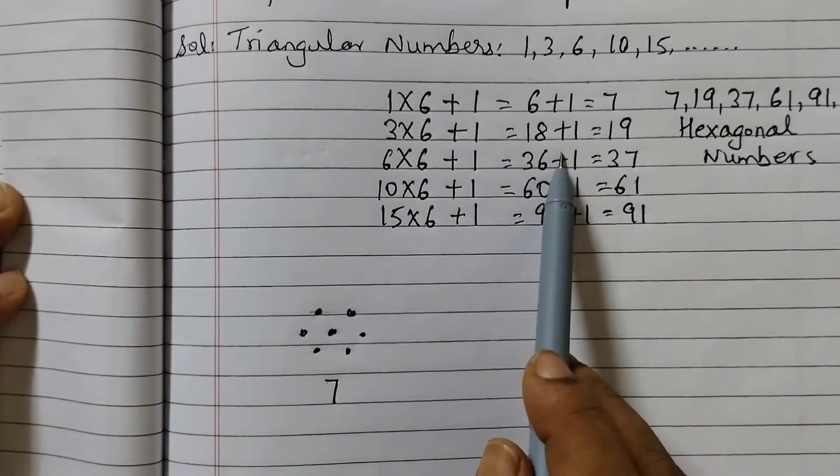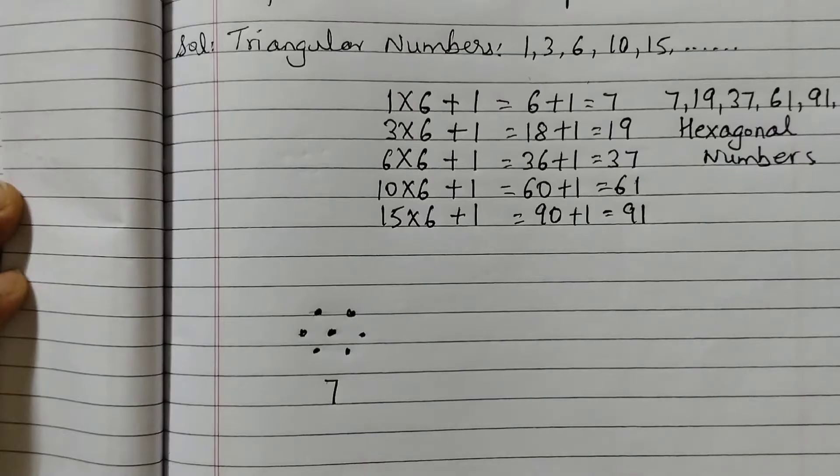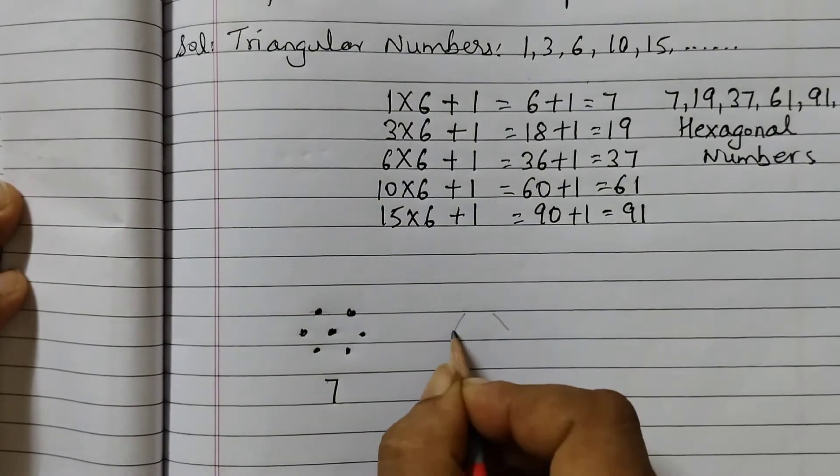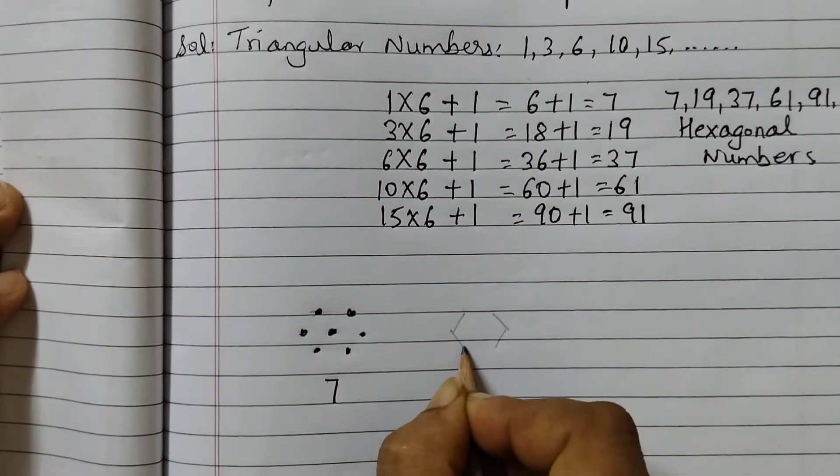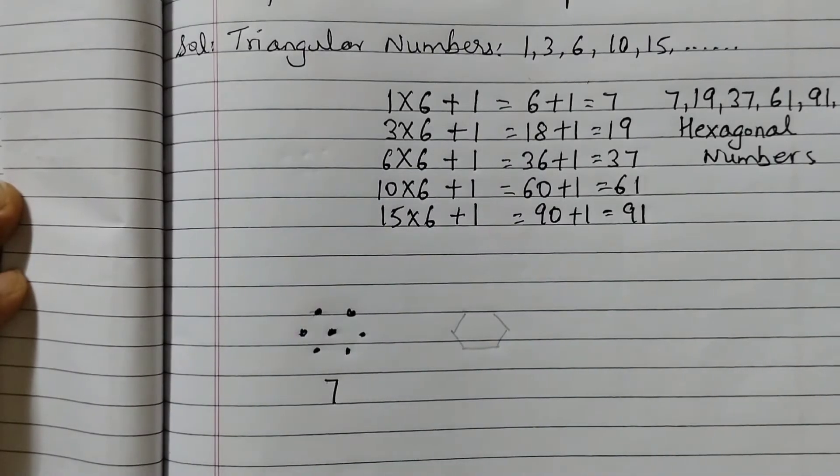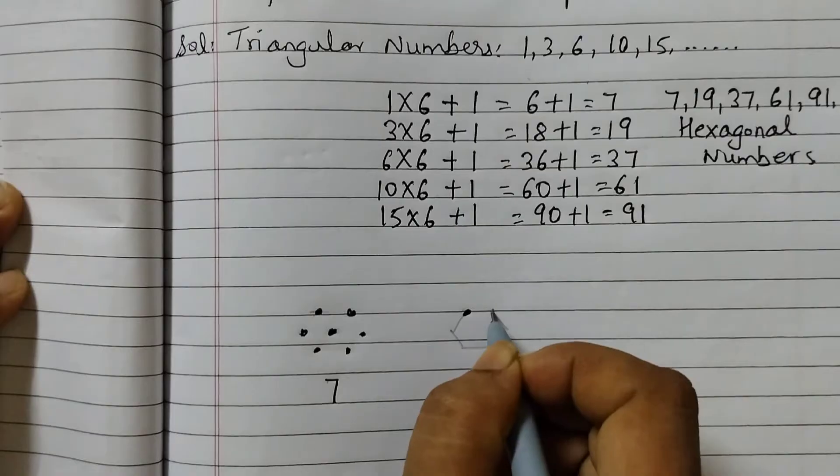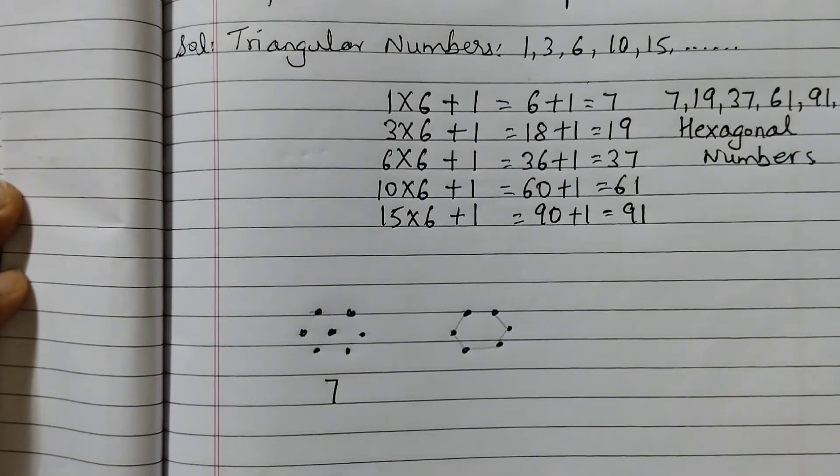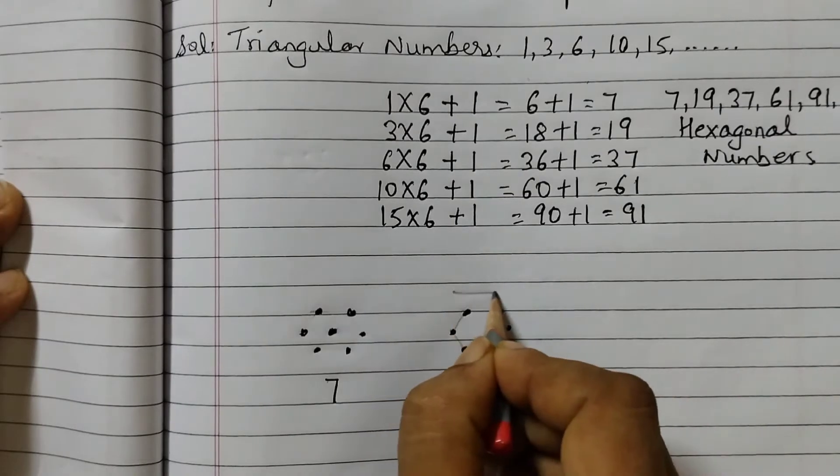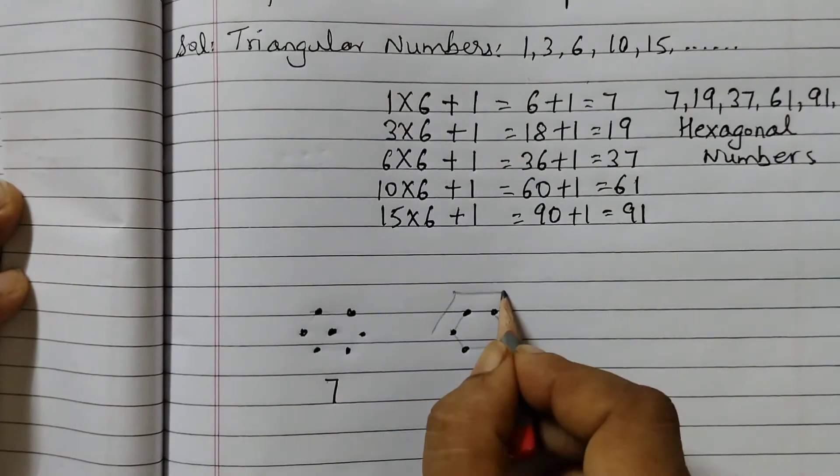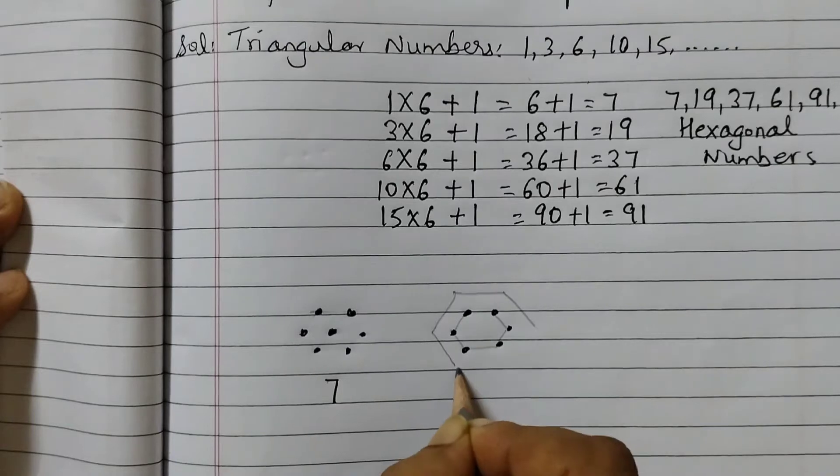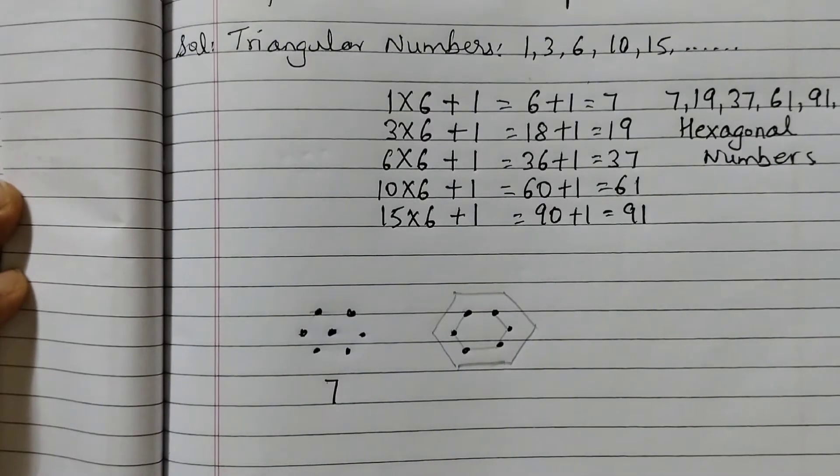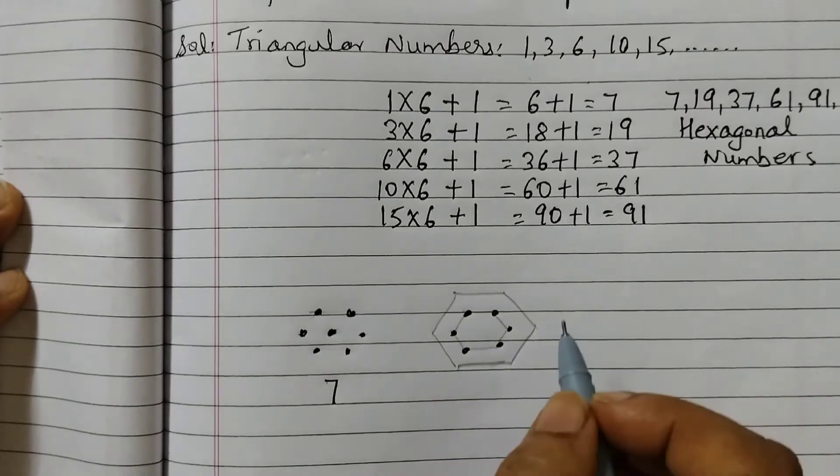Next is 18 plus 1. So we can draw two hexagons. 1, 2, 3, 4, 5, 6. We will put the dots first. 1, 2, 3, 4, 5, 6. And then draw a bigger hexagon. Six sided figure. This we are doing just so that we can do it easily.